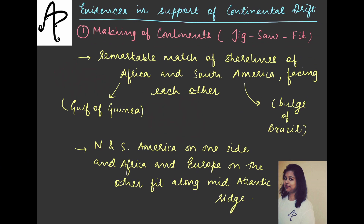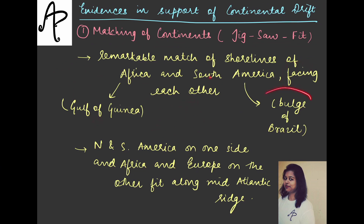It was proposed that if you note the shorelines of the continents, specifically Africa and South America, you would notice that the way they face each other, it shows that they were combined earlier. Specifically, the Gulf of Guinea area in Africa and the bulge of Brazil in South America. If you have an atlas, you should note down all of these places very precisely.